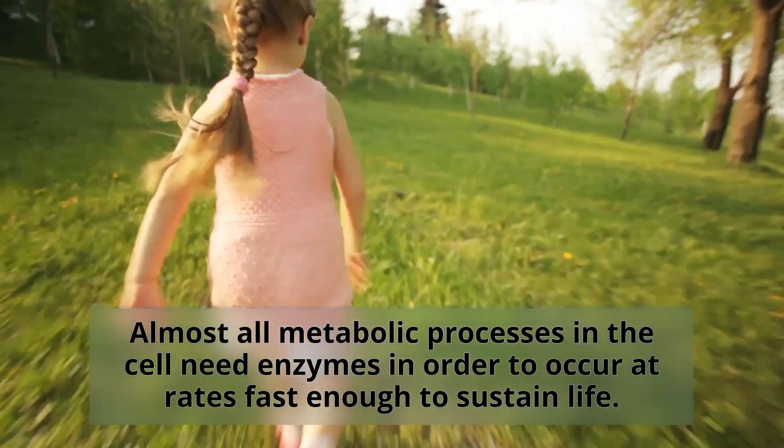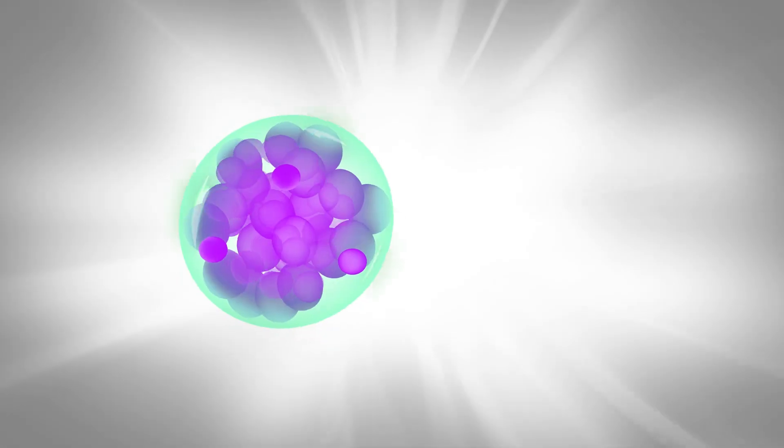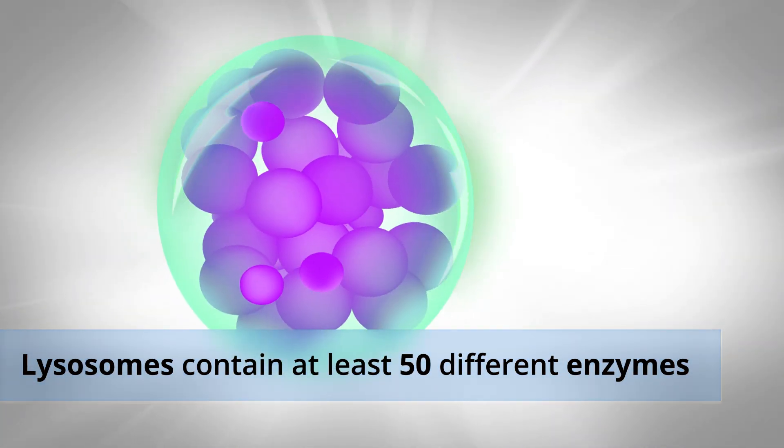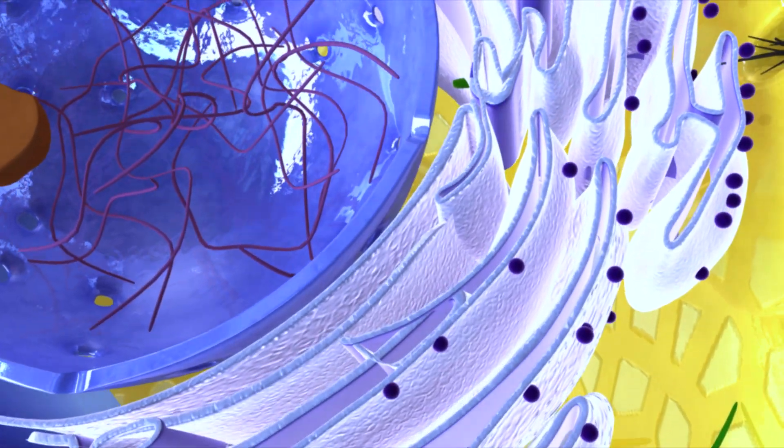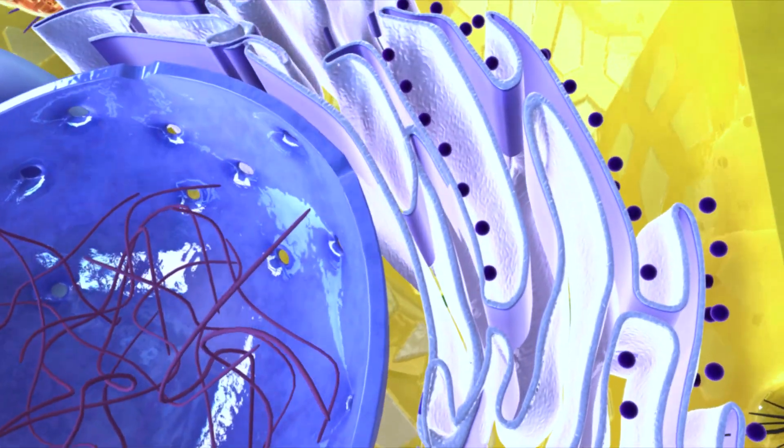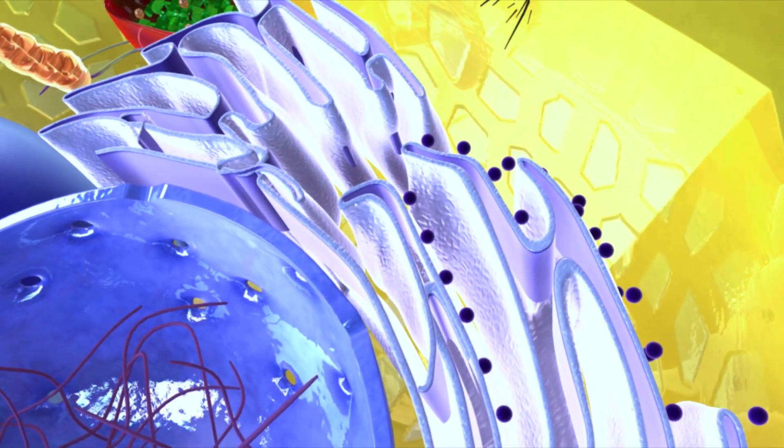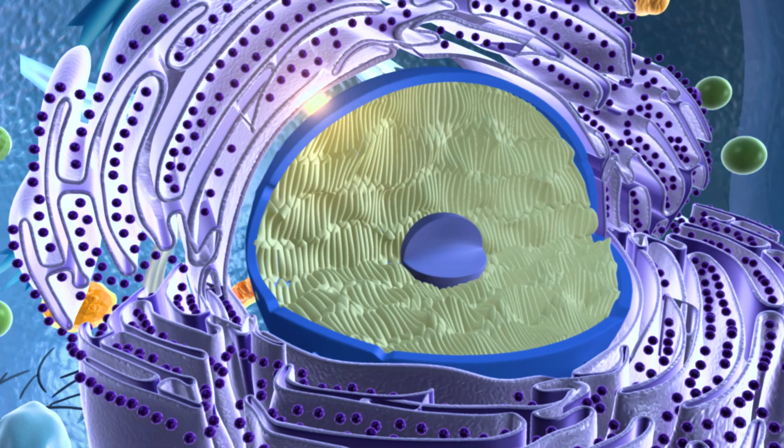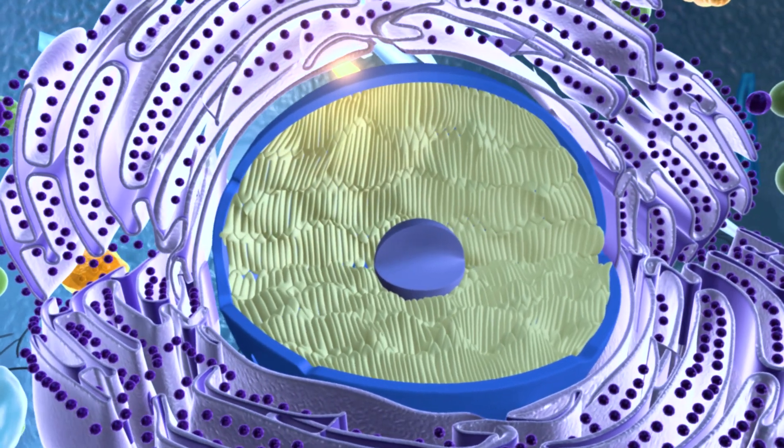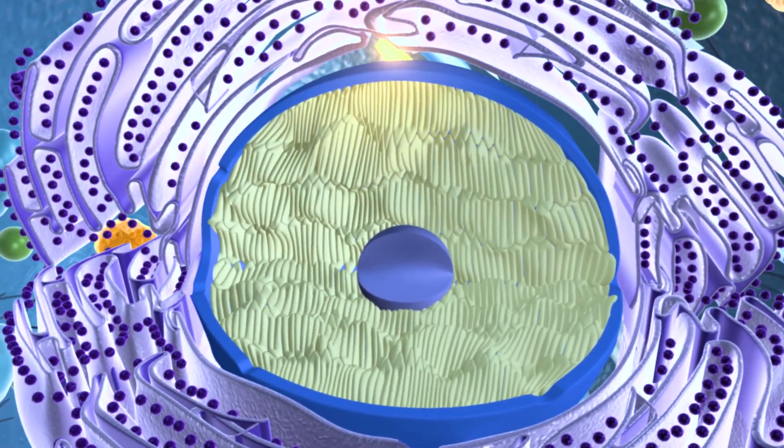Almost all metabolic processes in the cell need enzymes in order to occur at rates fast enough to sustain life. Lysosomes are known to contain over 50 different enzymes. These digestive enzymes are synthesized in the rough endoplasmic reticulum, an interconnected network of membrane sacs continuous with the nuclear membrane.